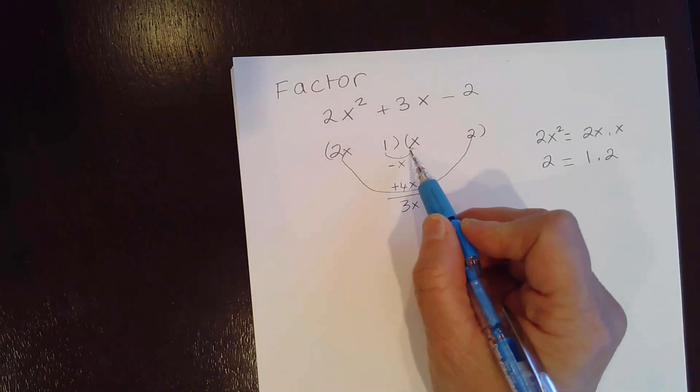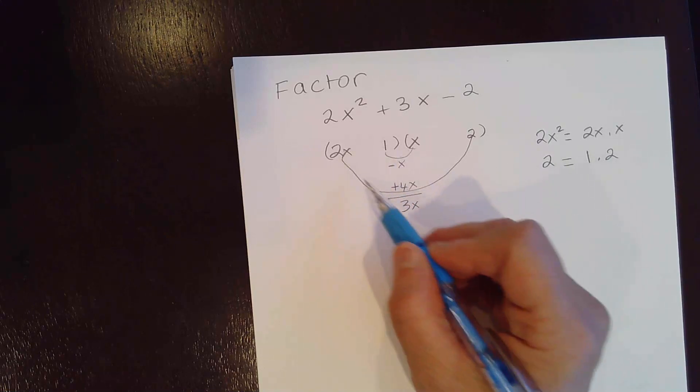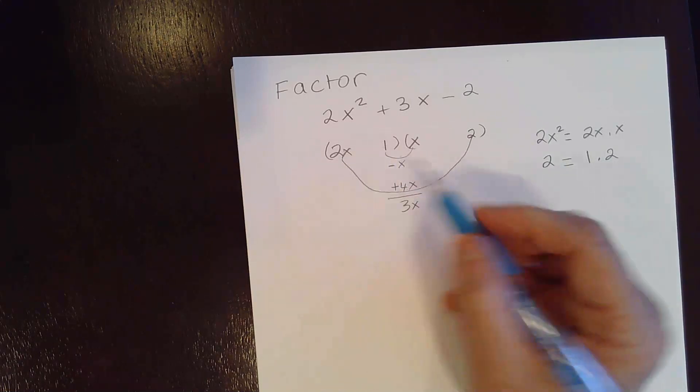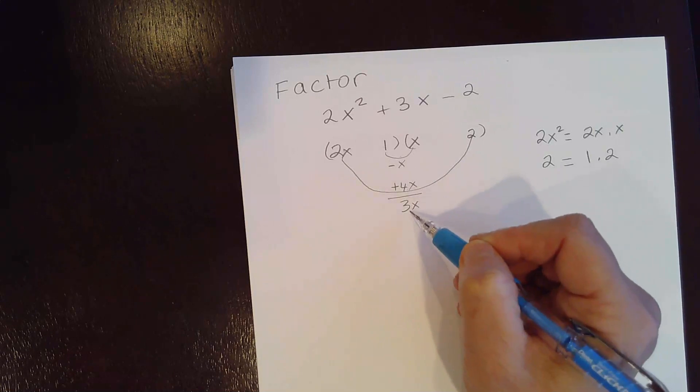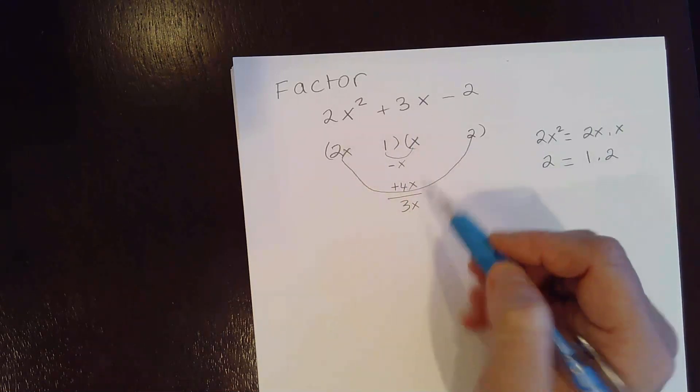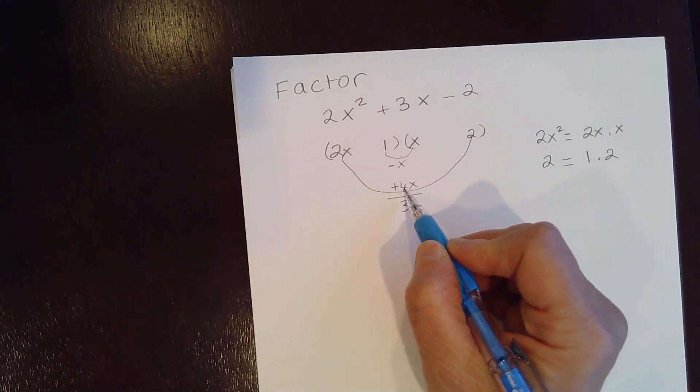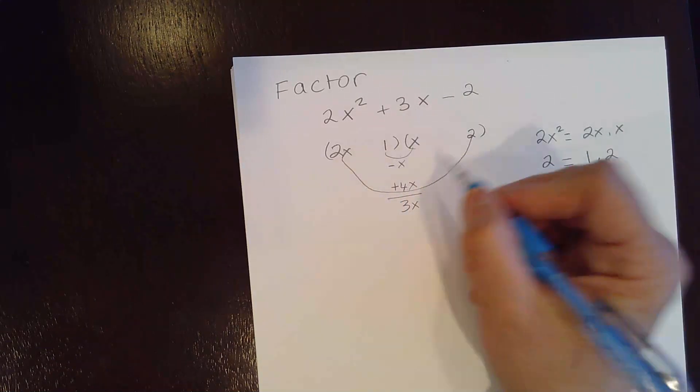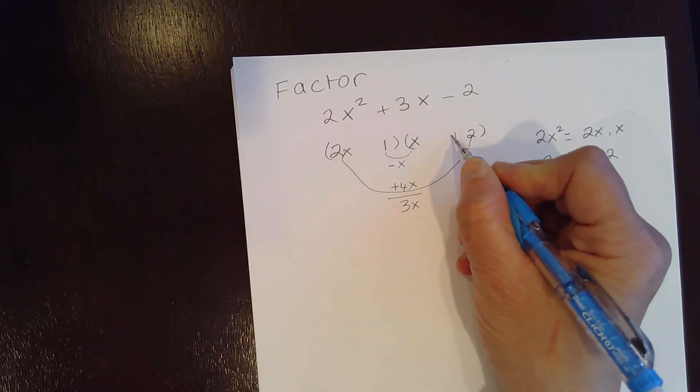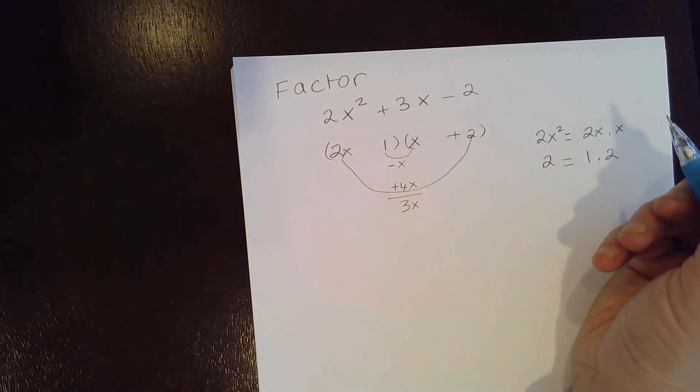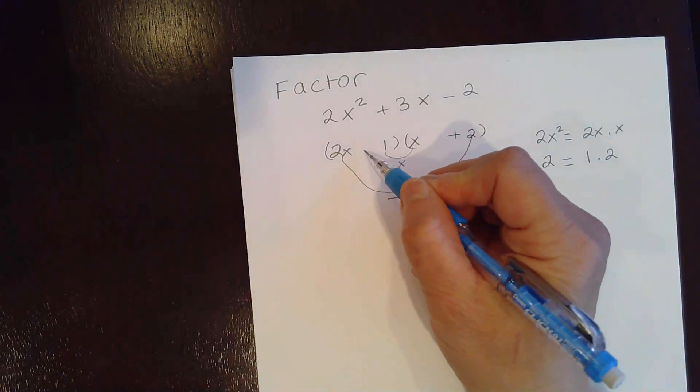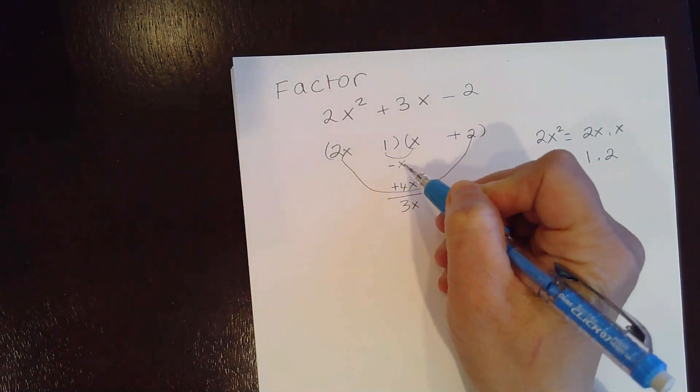You multiply the innermost here and the outermost terms. And if you multiply them, you add them up, you should get the middle term. So by making this positive 4x, I get the middle term. So this one must be positive too. And this one must be negative 1x, so this one negative.